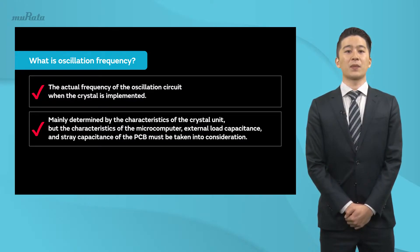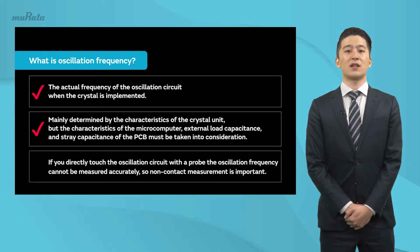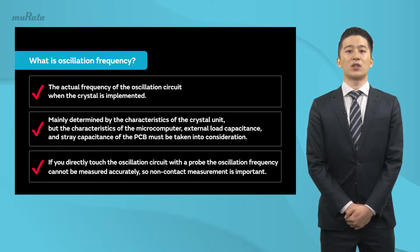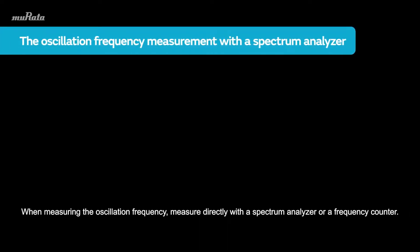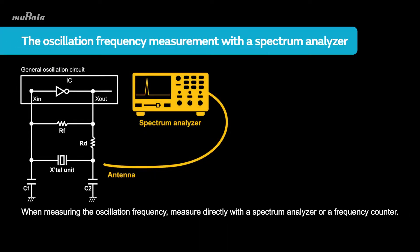If you directly touch the oscillation circuit with a probe, the oscillation frequency cannot be measured accurately, so non-contact measurement is important. When measuring the oscillation frequency, measure directly with a spectrum analyzer or a frequency counter.